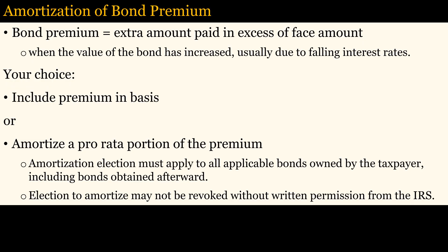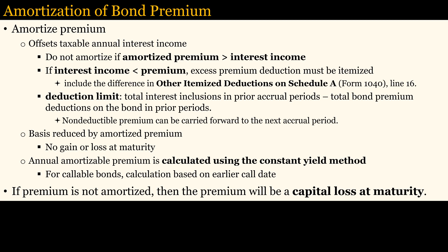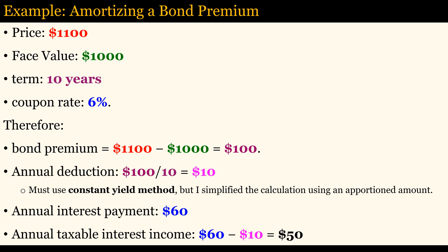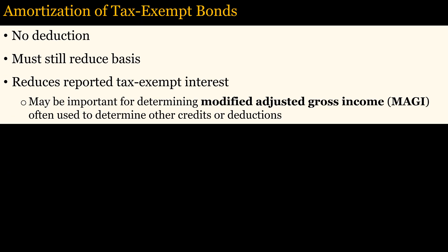Sometimes, bonds are bought at a premium, meaning that the purchase price was higher than the face value. This happens because interest rates have declined, but the bond is still paying a higher coupon rate. You can choose to include the premium in your adjusted basis, which will reduce your taxable income when the bond matures or when it is sold, or you can amortize the premium by deducting a pro-rata portion of the premium every year from your interest income. The amortized premium can be used to reduce the taxable annual interest income and to reduce the tax basis. If the premium is not amortized, then the premium will be a capital loss at maturity. This is a simple example on how to amortize a bond premium. Amortizing the premium allows you to deduct $10 annually from your taxable interest. Freeze the screen to study it in detail. Although there is no deduction for amortizing tax-exempt bonds, the purchase premium must still be used to reduce tax basis, which reduces reported tax-exempt interest. This may be important for determining modified adjusted gross income, often used to determine other credits or deductions.